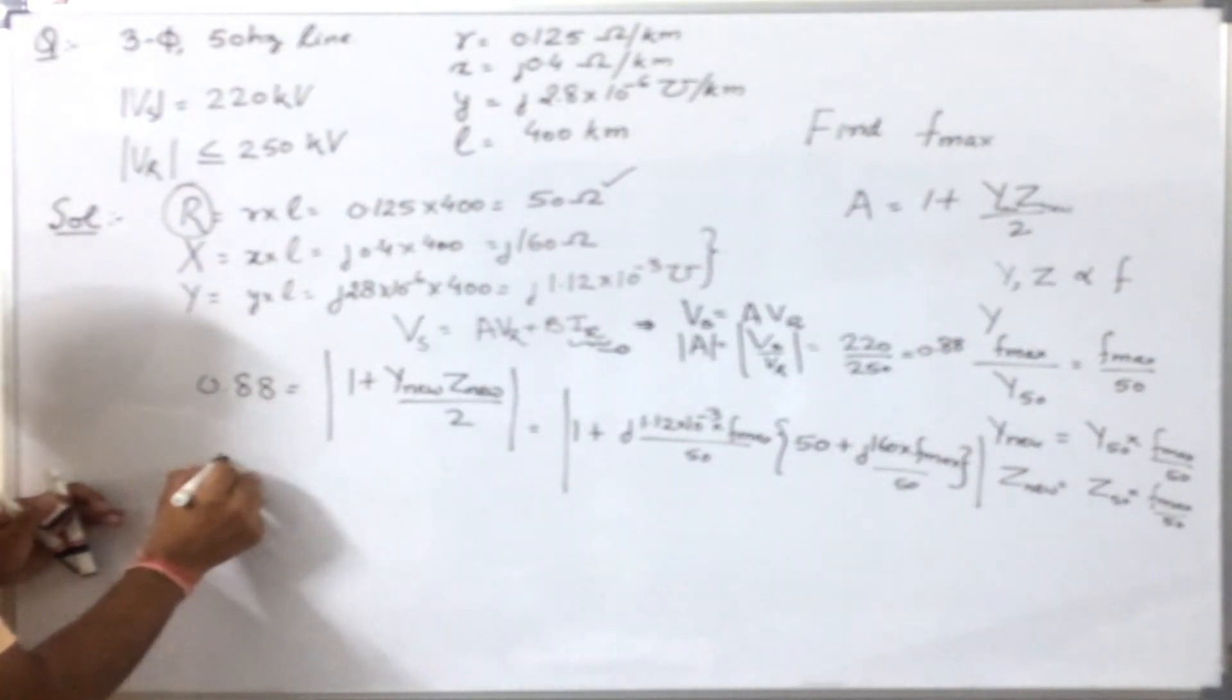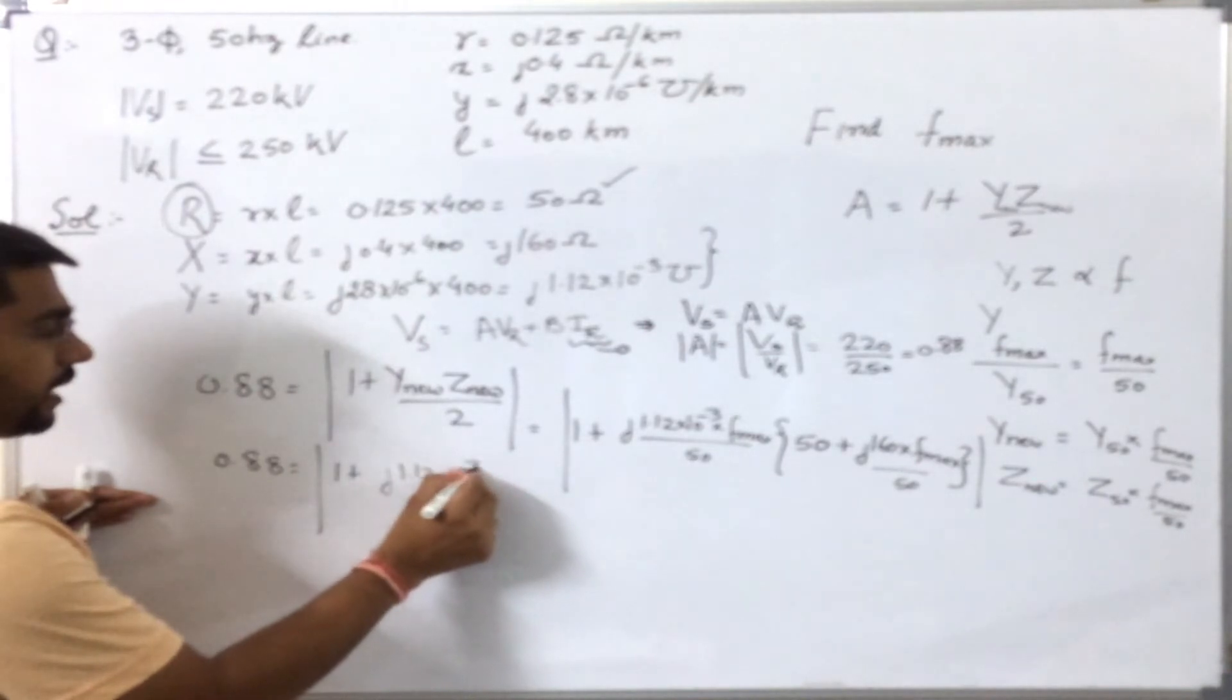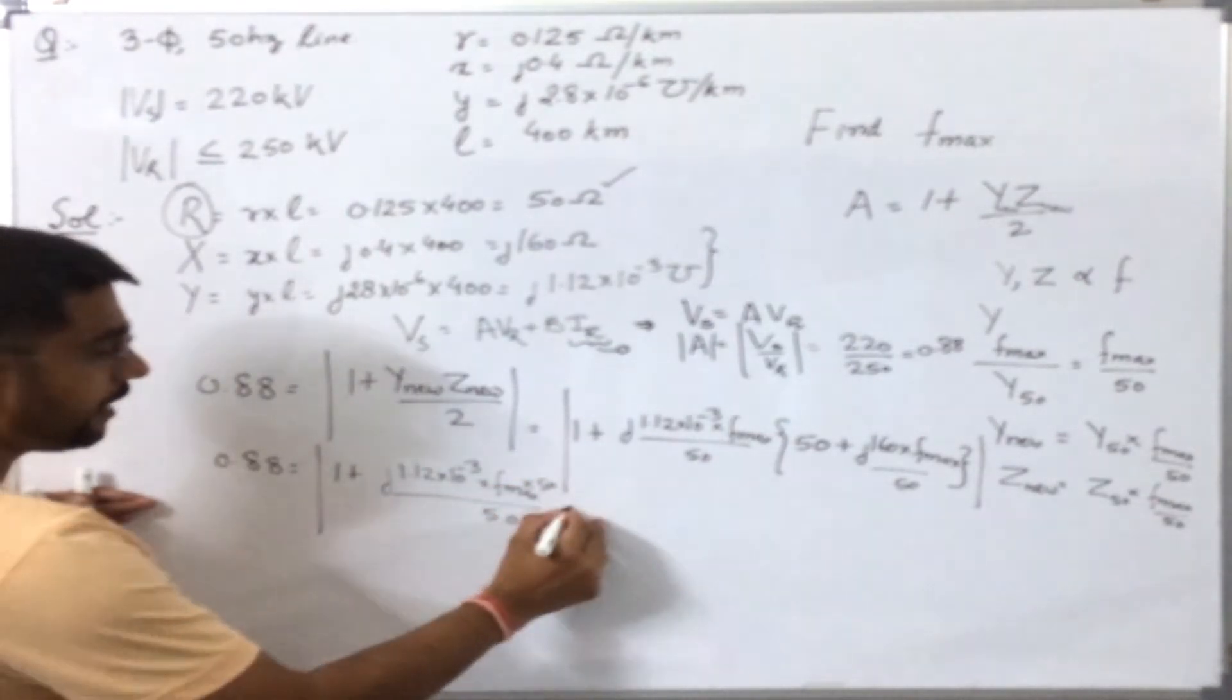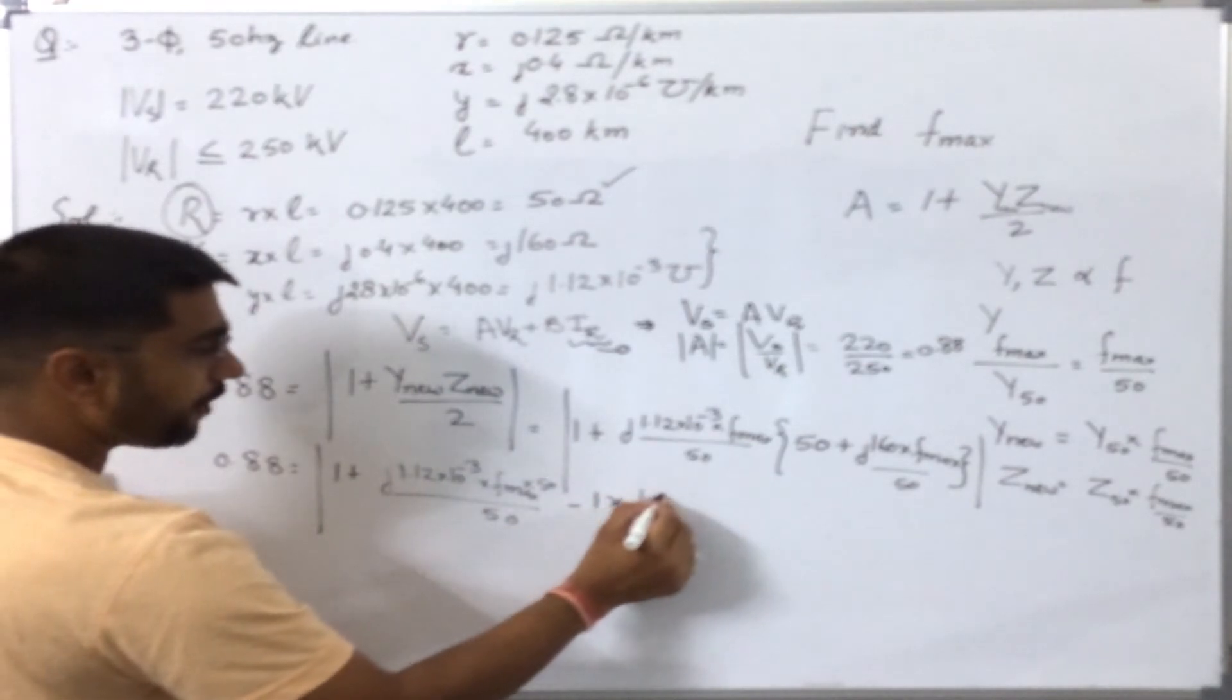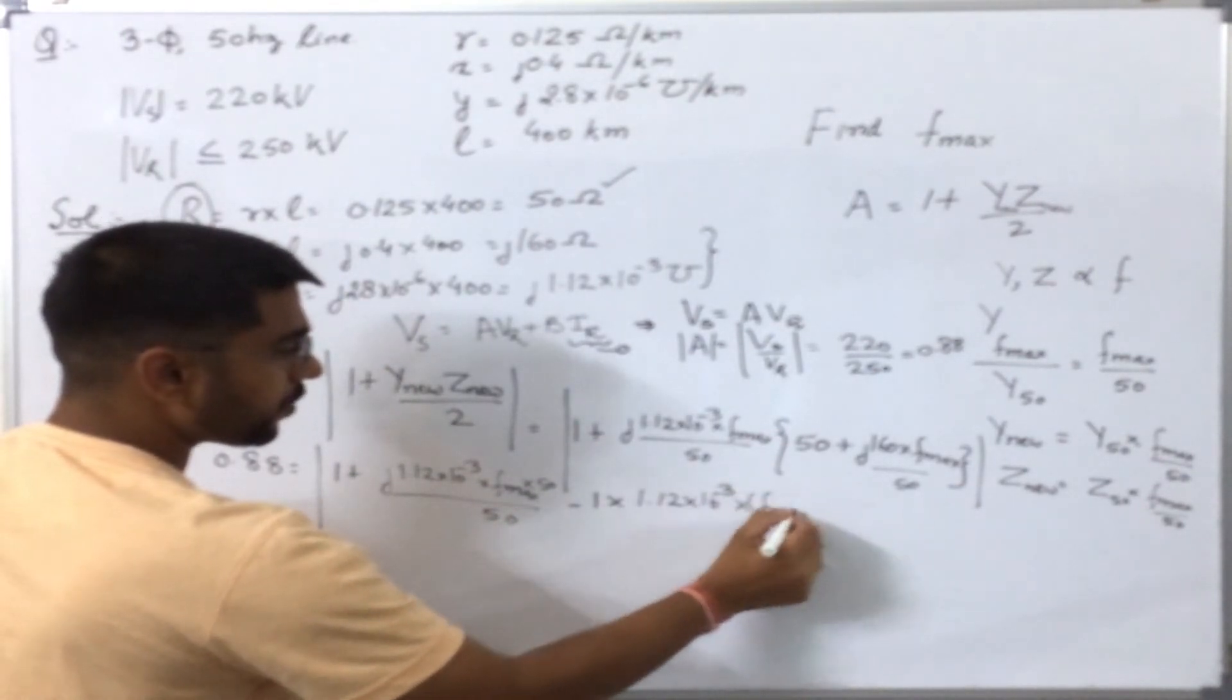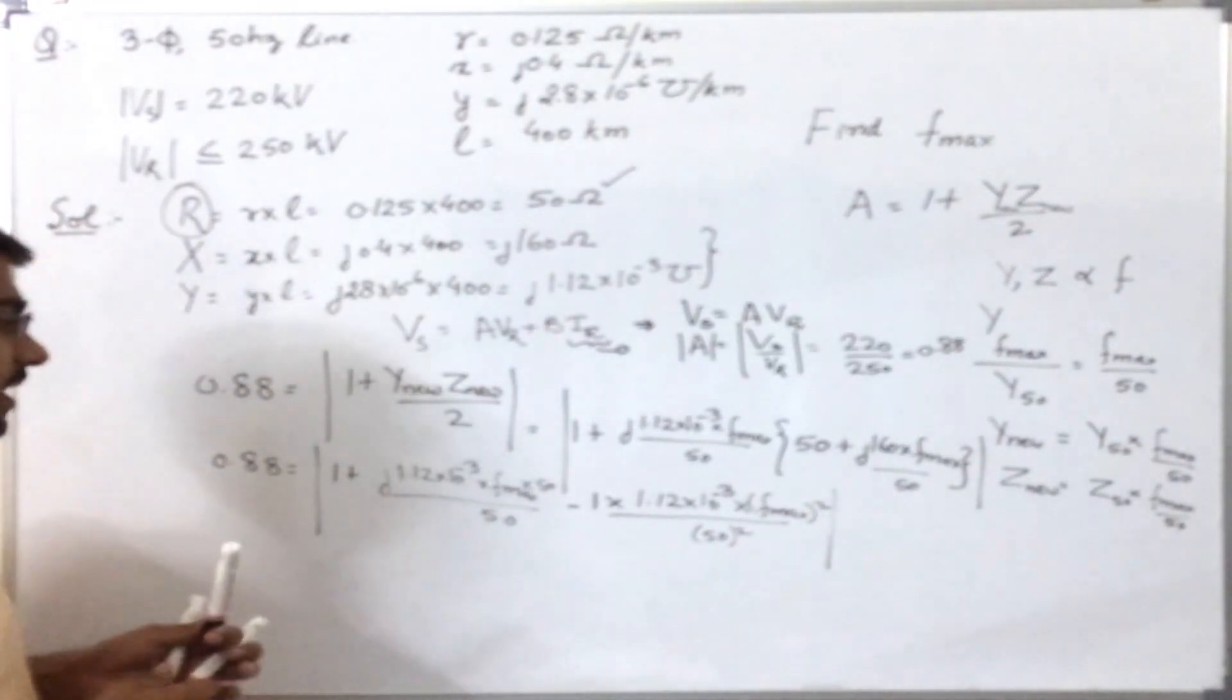Now, solving it further, I will get 0.88 equals 1 plus j 1.12 times 10 to power minus 3 times f_max times 50 over 50, and j times j equals minus 1, that is j squared is minus 1. It will become 1.12 times 10 to power minus 3 times 1.12 times f_max squared over 50 squared.